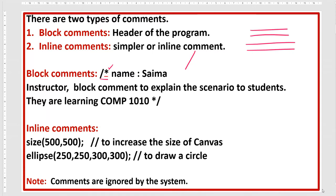You always have to start with a slash symbol and asterisk sign, and at the end you first have to put the star sign and then the slash symbol. So this is the example: name, Simon, instructor.